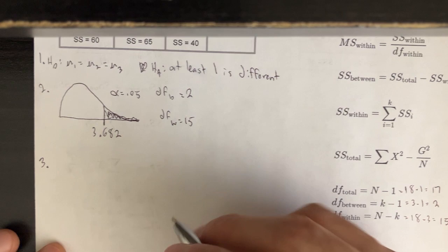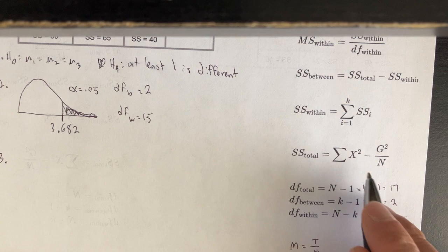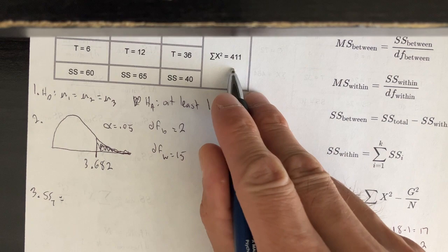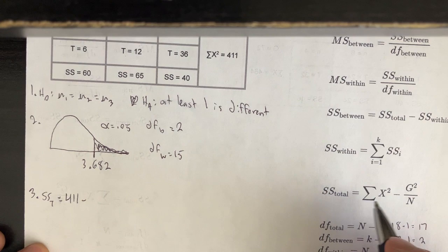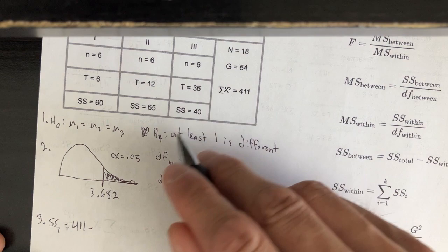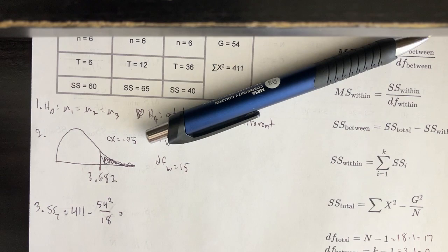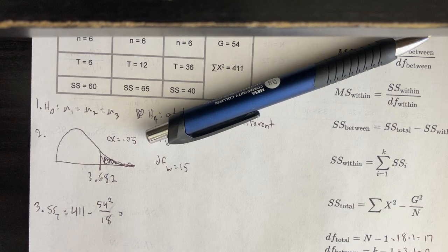Now we can start calculating the statistic, beginning with the sum of squares total. We plug in: SS total equals the sum of x-squared, which was 411, minus the fraction G-squared over big N — so 54 squared over 18. Punching this into the calculator, we get 249.